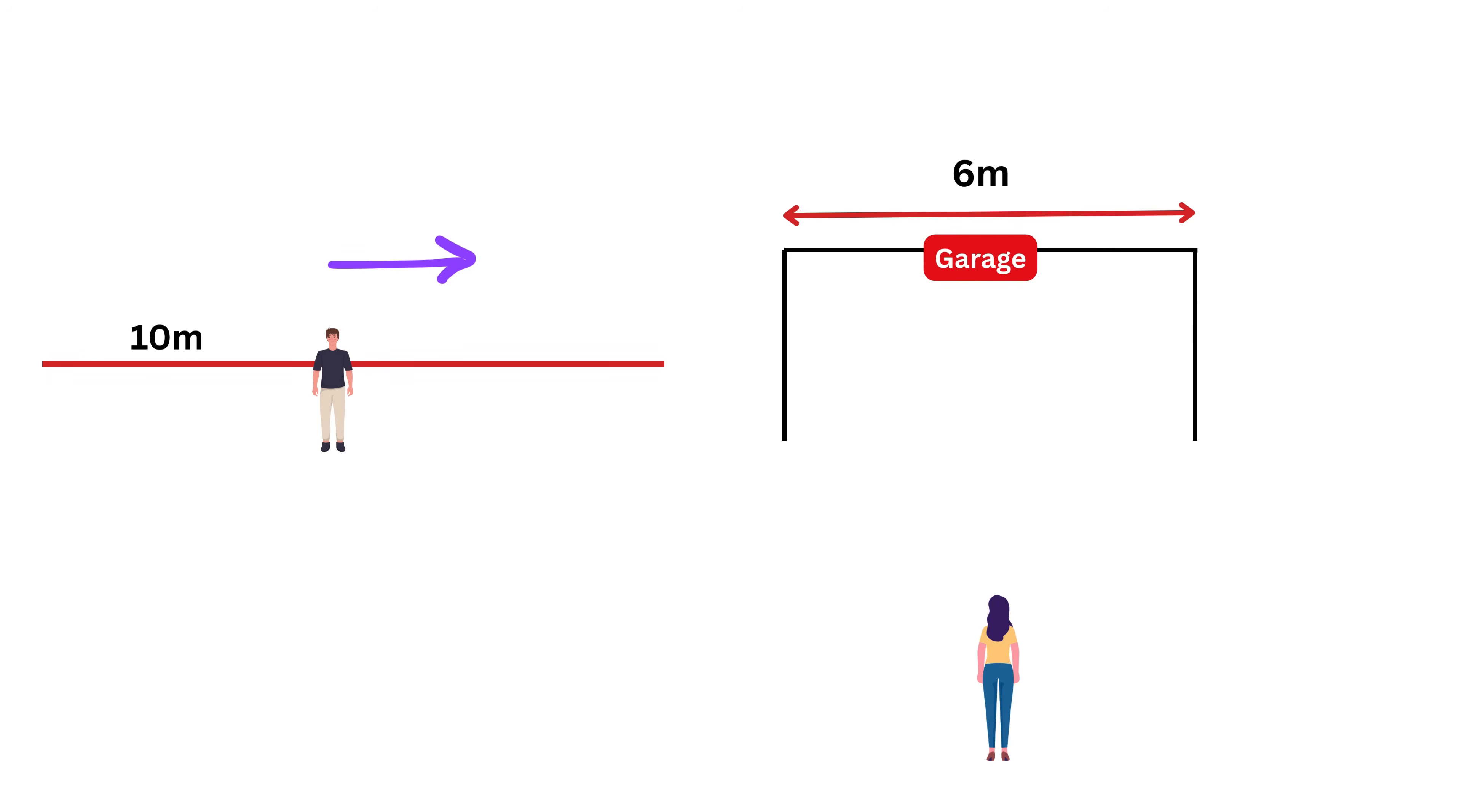Then Bob started moving towards the garage with a constant speed of 0.8 times c. Yeah, it is hypothetical, but you can assume he has some futuristic propulsion system to achieve that.